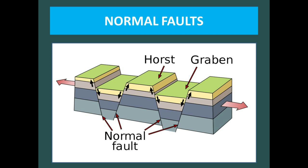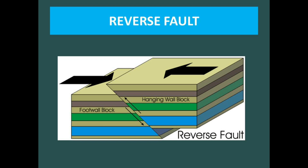The second type is reverse fault, which is formed due to compressional forces, in which the hanging wall block moves upward relative to the footwall. The associated structures include triangular zones, thrust faults, windows, klippe, nappes, and other structures, which are detailed topics I will not explain here.